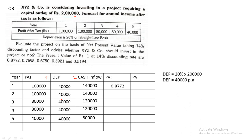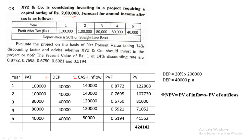The PV factors at 14% are: 0.8772, 0.7695, 0.6750, 0.5921, and 0.5194. Multiplying each cash inflow by its PV factor gives: 1,22,808; 1,07,730; 81,000; 71,052; and 41,552. Totalling these gives 4,24,142. Applying the NPV formula — inflow 4,24,142 minus outflow 2,00,000 — gives a net present value of ₹2,24,142, which is a quite good return.